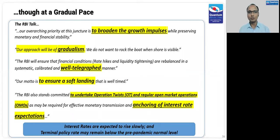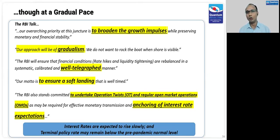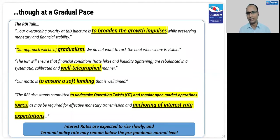We should also expect this to be a shallow interest rate cycle. Probably the repo rate will find a normal level lower than what we had before the pandemic. The long-term repo rate average is close to 6%, but in this cycle we will probably go to 5 or 5.5%, somewhere between that based on the current trajectory.